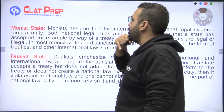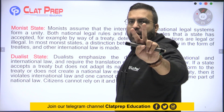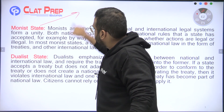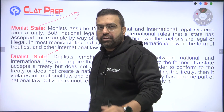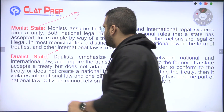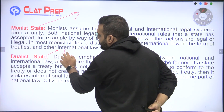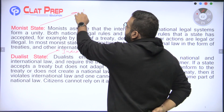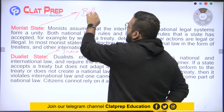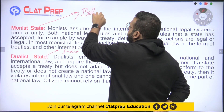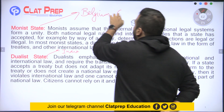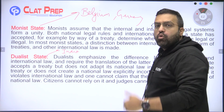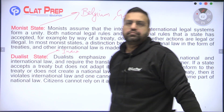In the world there are two types of states — some are monists, some are dualists. For example, India is a dualist state. And countries like Belgium, Netherlands, and Germany — these countries are monist states.